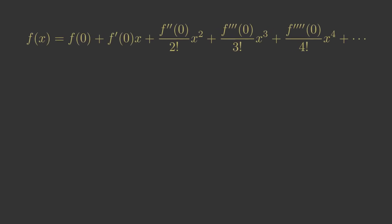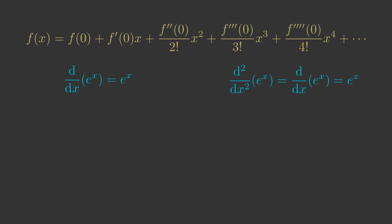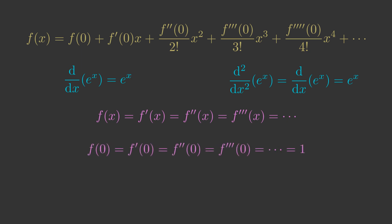We can now calculate the Maclaurin series for e to the x. We know the general equation for a series. We also know that d by dx of e to the x is e to the x. Differentiating e to the x once gives e to the x, and differentiating it again gives e to the x again. We can apply the same logic to the third derivative, which is also e to the x, and so on. So f of x, f prime of x, f prime prime of x are all equal to e to the x. And since e to the 0 is 1, then f of 0, f prime of 0, f prime prime of 0, etc., are all equal to 1.